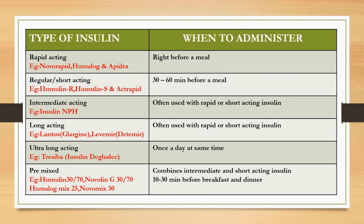Here we can see when to administer each type. Rapid-acting insulin can be administered right before a meal. Regular or short-acting insulin should be given 30 to 60 minutes before a meal. Intermediate-acting insulin is often used with rapid or short-acting insulin, usually once a day but at the same time. Long-acting insulin is often used with rapid or short-acting insulin, usually once or twice a day as per the doctor's order. Ultra-long-acting insulin is given once a day at the same time. Pre-mixed insulin combines intermediate and short-acting insulin and can be taken 10 to 30 minutes before breakfast and dinner.